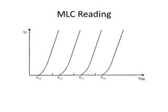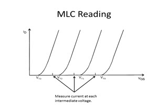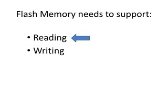The approach for MLC flash memory is not too different. Since we have more than two charge states, we have more than two IV curves — one for each charge state. And we have multiple intermediate voltages. So all we have to do is take a current reading at each of those intermediate voltages, and based on those current readings we can figure out what the charge state is. So now you know how data is read from flash memory.